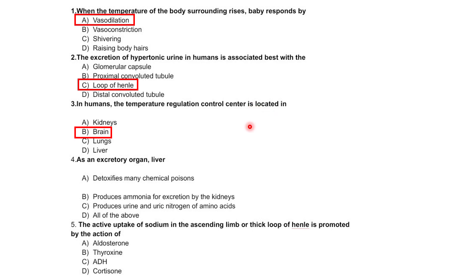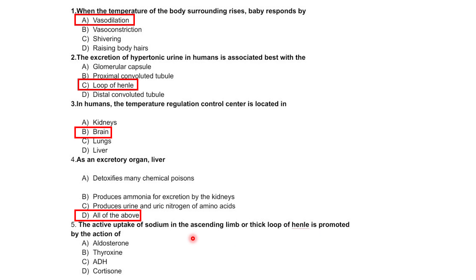As an excretory organ, the liver detoxifies many chemical poisons, produces ammonia for excretion by the kidney, produces urea from nitrogen of amino acids, or all of the above. The best option is all of the above. The active uptake of sodium in the ascending limb or thick loop of Henle is promoted by the action of aldosterone, thyroxine, ADH, or vassopressin.